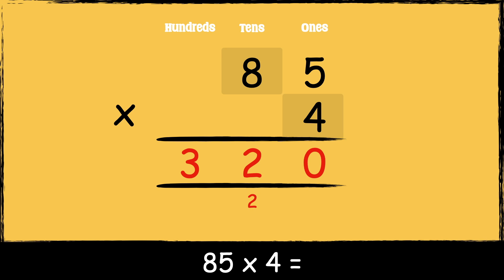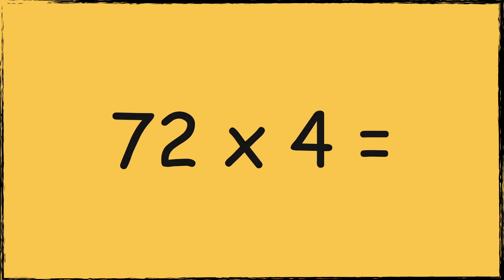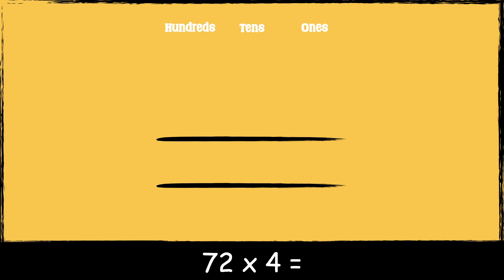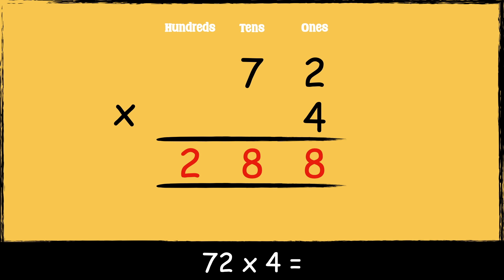We need to add the two tens below, so thirty-two add two is thirty-four. So the answer is three hundred and forty. The next calculation is seventy-two times four. First we make sure the numbers are lined up accurately. The number seventy-two has two ones and it has seven tens, and the number four has four ones. So now we're ready to multiply: four times two is eight. Next we multiply four by seven tens: four times seven is twenty-eight. So the answer is two hundred and eighty-eight.